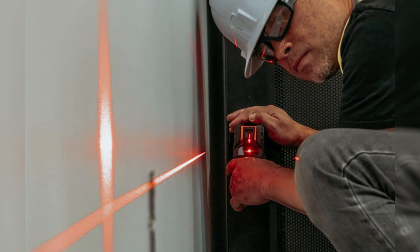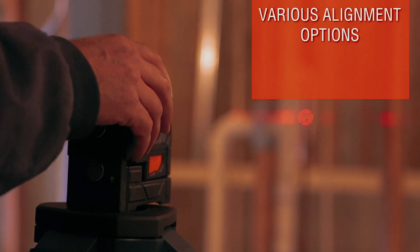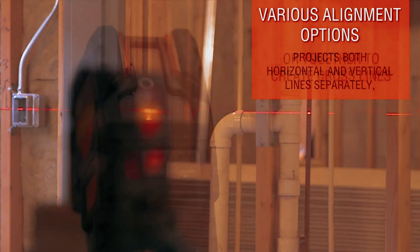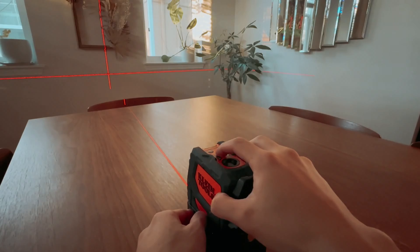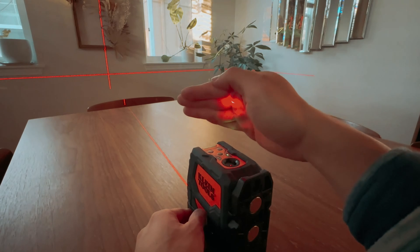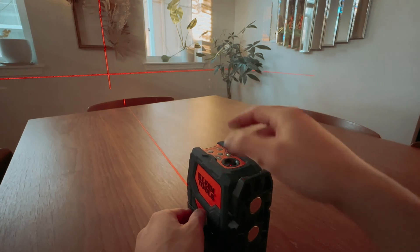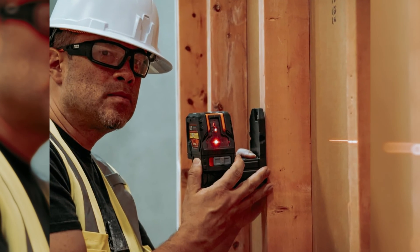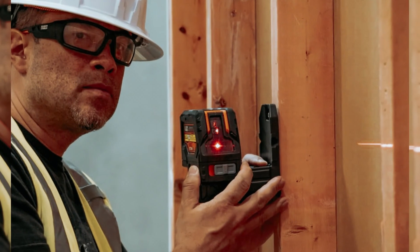One of the standout features of this laser level is its rugged body, which boasts IP54 water and dust resistance for durability and tough job site conditions. The included hard plastic carrying case ensures safe storage and transport. The magnetic mounting bracket is another convenient feature, offering 360-degree rotation, rare earth magnets, and multiple mounting options for maximum flexibility.